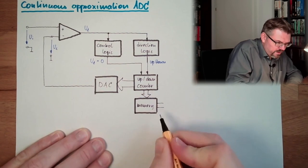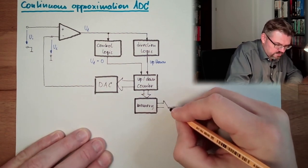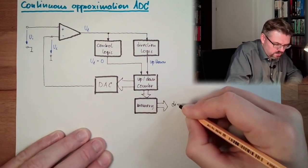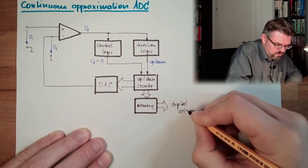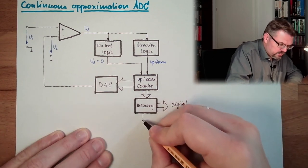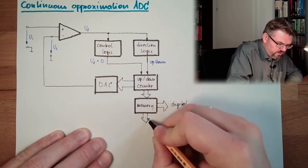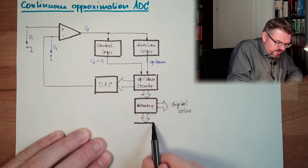The output of the memory is the digital value. And of course I might also have somewhere a display to display the digital value.